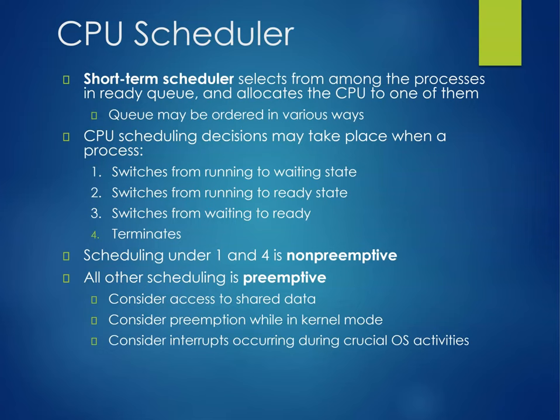There are multiple schedulers involved. The short-term scheduler selects from among the processes in the ready queue and allocates the CPU to one of them. The queue can be ordered in various ways. CPU scheduling decisions may take place when a process switches from running to wait state, running to ready, waiting to ready, or it terminates.